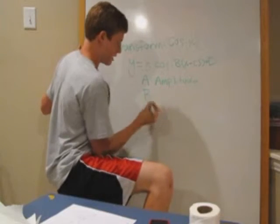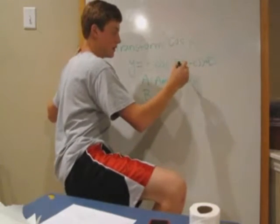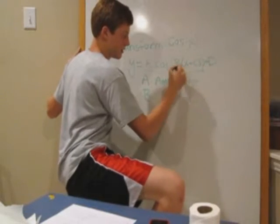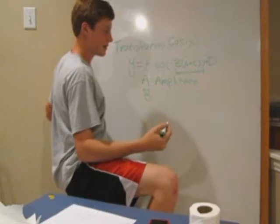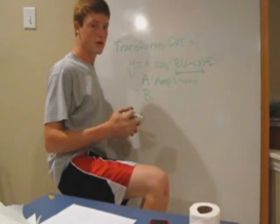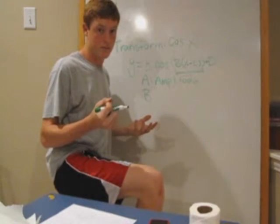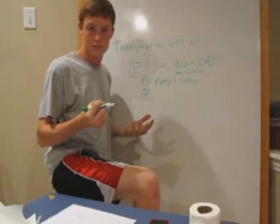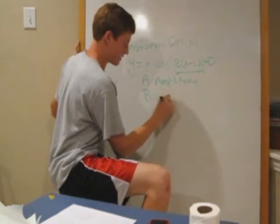And secondly, we have our B value, which is going to be our horizontal stretch. Now, in this parentheses right here, everything that you see is going to be the opposite of what you think. So the B value really is going to be, like if it's 2, it'll be 1 half. If it's pi, it'll be 1 over pi. And so the B value is going to be our horizontal stretch.